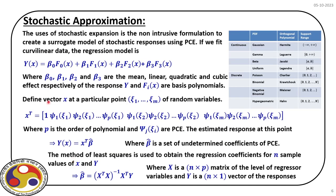We use this stochastic expansion in the non-intrusive formulation to create the surrogate model — the response surface generated through regression. With many support points we use a least square solution. The model has some error, which we can quantify. We also discussed r-squared and adjusted r-squared values to decide whether the model is good. For the PC-based representation we have ε_i as Gaussian random variables, and we can find the confidence interval for this representation.